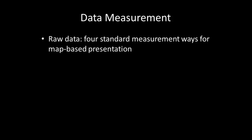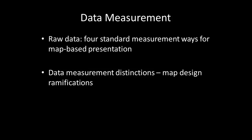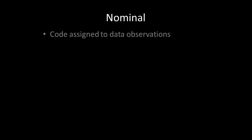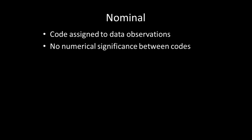One of the first important ideas to understand in cartography is data measurement. Raw data is measured in four standard ways for map-based presentation. It is important to understand data measurement distinctions as these distinctions have map design choice ramifications, and thus by extension how well or not the map will be understood. Nominal data are data where a code has been assigned to observations, however there is no numerical significance between codes. Nominal data are sometimes referred to as qualitative data.